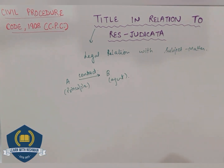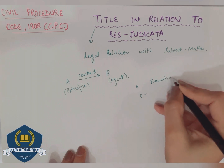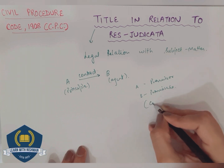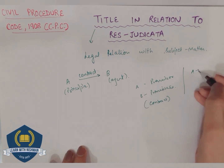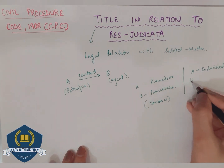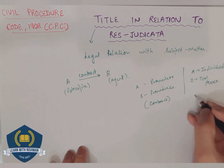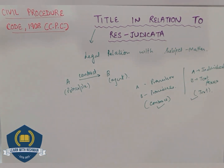So tell me, will res judicata apply? In the former suit, A was the promisor and B was the promisee — it was a contract case. In the subsequent suit, A is a simple individual and B is a tort feasor — one who has committed a tort. So the case is now of tort, in individual capacity. As we can see, the title is different. Therefore, res judicata will not apply.